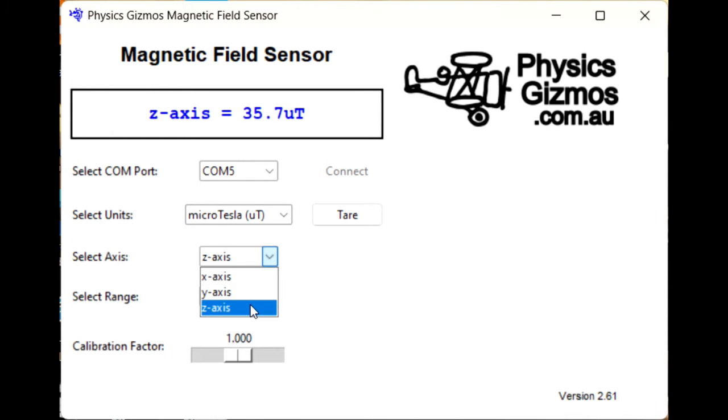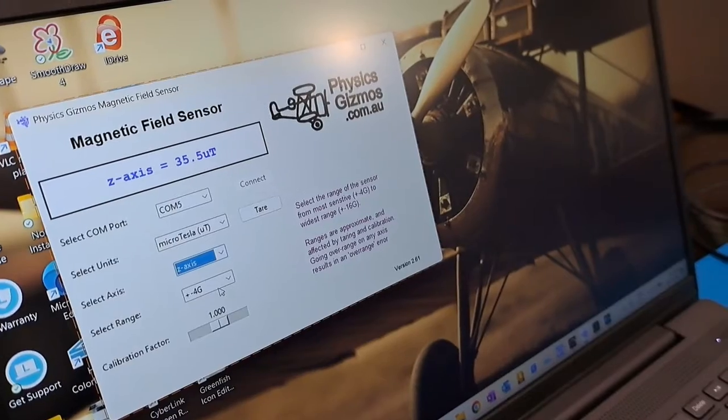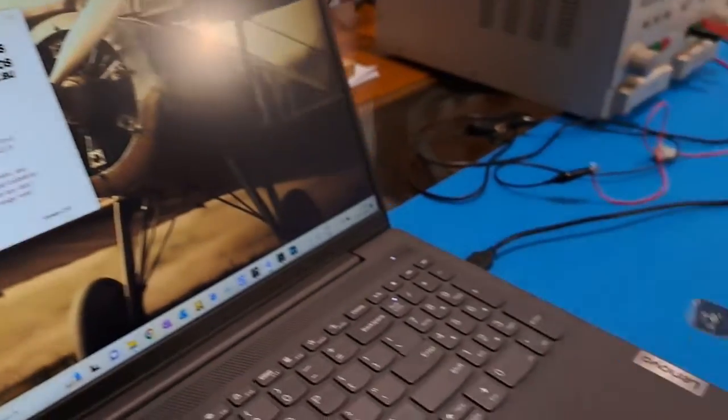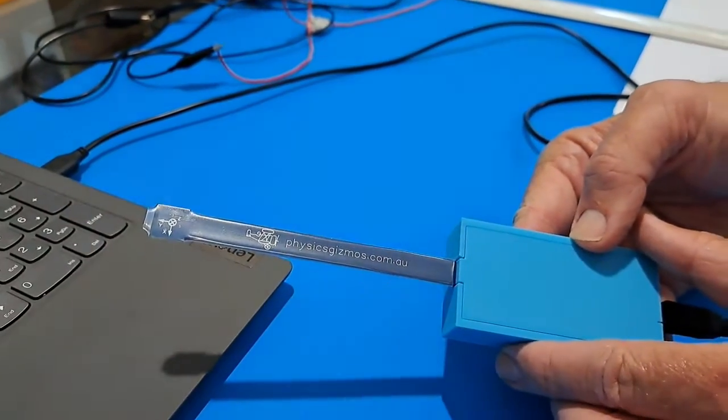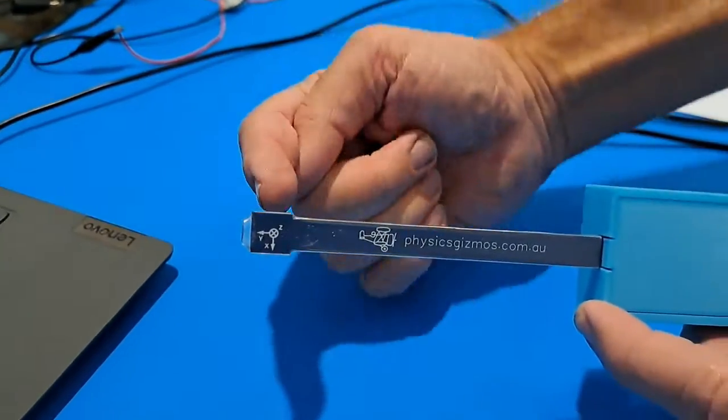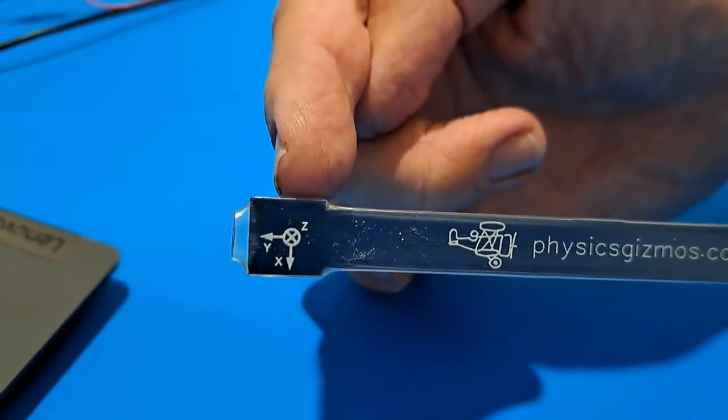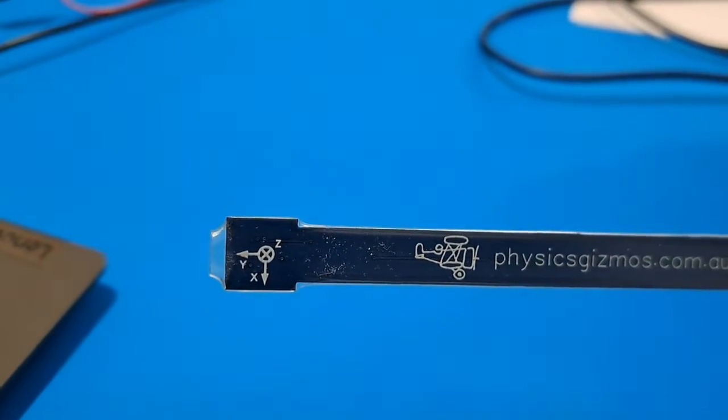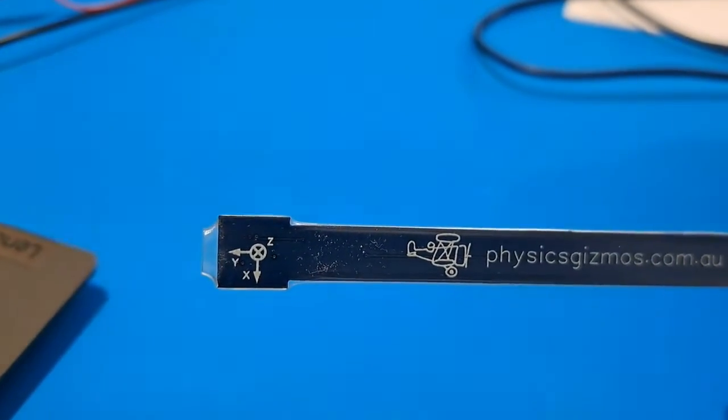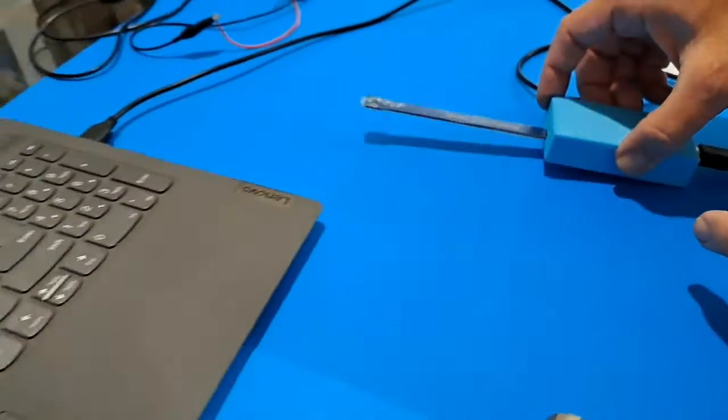You can measure the magnetic field in the x-axis, y-axis, or z-axis. I find the z-axis particularly useful. If you look at the back here, I've got a little diagram there, so you can easily see which axis is which on the back of the sensor.